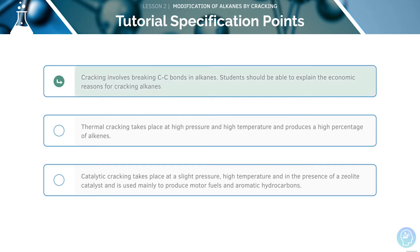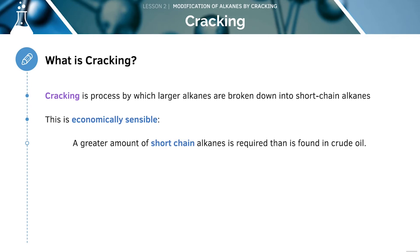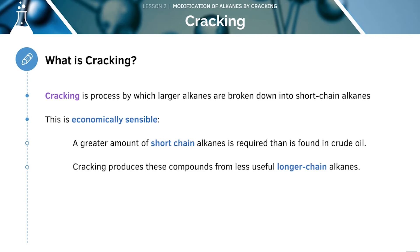First, we'll be looking at the bond that is broken during cracking. Cracking is how we break down larger alkanes into short chain alkanes. This is quite cost effective, since we need more short chain alkanes than we can get in crude oil. We can produce these compounds from the less useful longer chain alkanes.